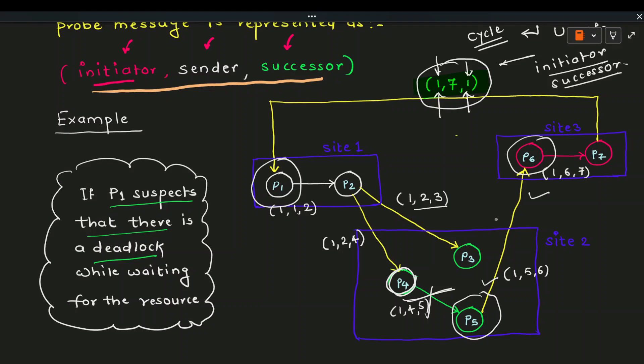That's enough from this session. We have seen what the Chandy-Misra algorithm is and how it detects deadlock. We also saw that if multiple nodes start the deadlock detection process simultaneously and each kills itself for recovery, it may result in process overkilling.